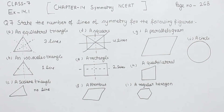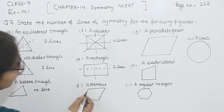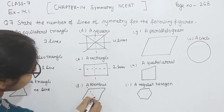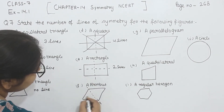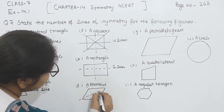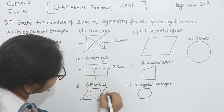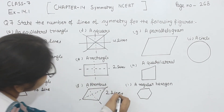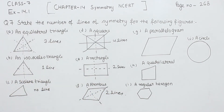Now, comes to part F. In this one, we are having a rhombus. All these sides are equal to each other. So we are going to create the lines of symmetry, and this will have two lines of symmetry.